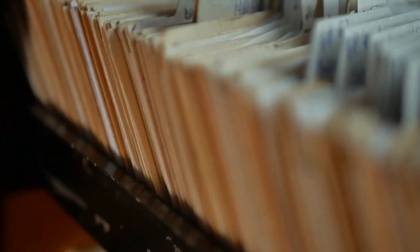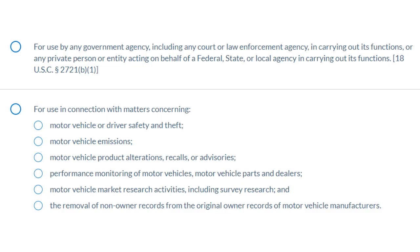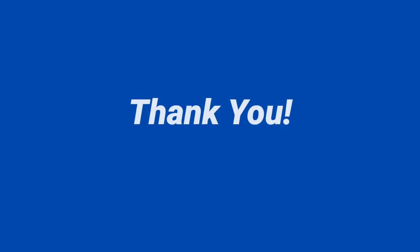the Driver Privacy Protection Act, or DPPA, regulates who and for what reasons the data can be requested. DPPA is a federal law and not limited to Utah alone. So you should have one of the permissible reasons as defined in the DPPA Act to legally conduct the search. There are about 15 such points — I've included the link to the document in the comments section. Hope this was helpful. Thank you for watching.